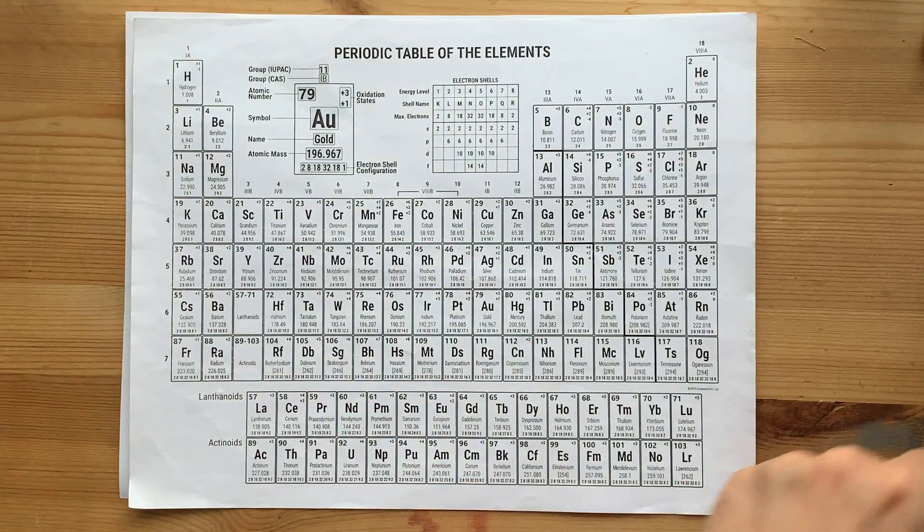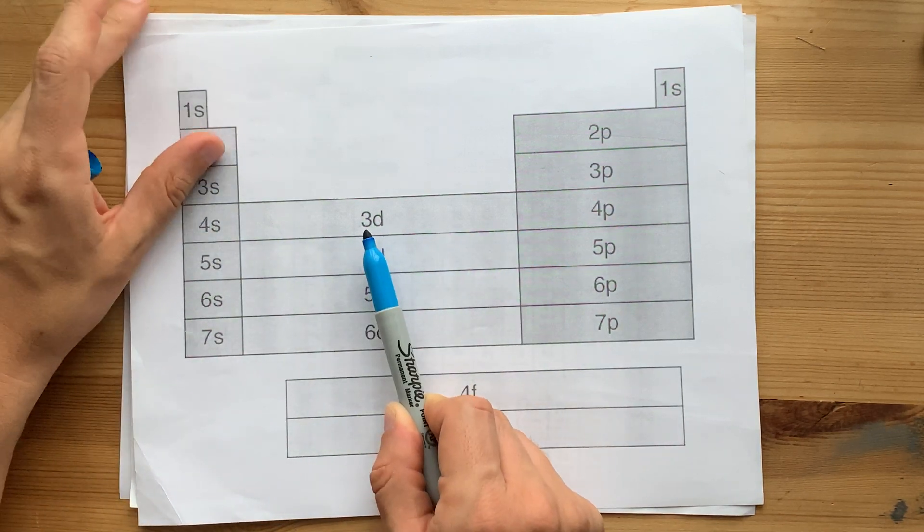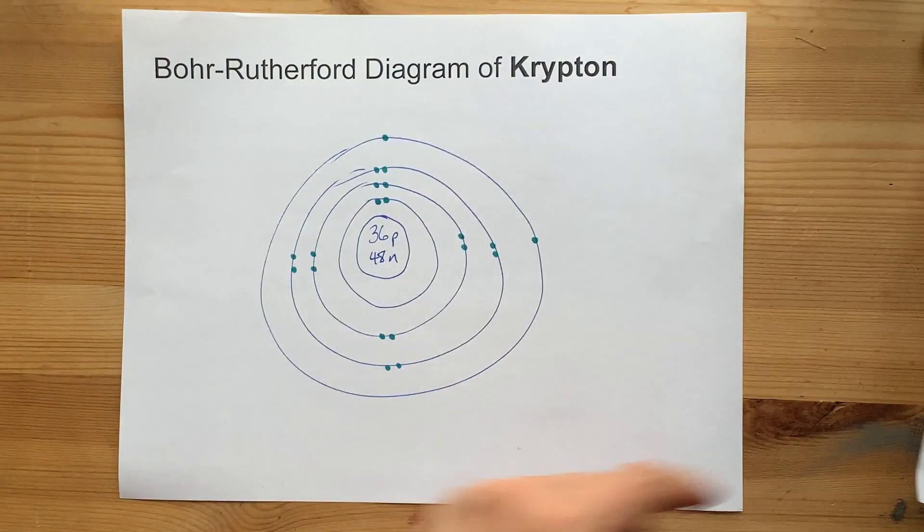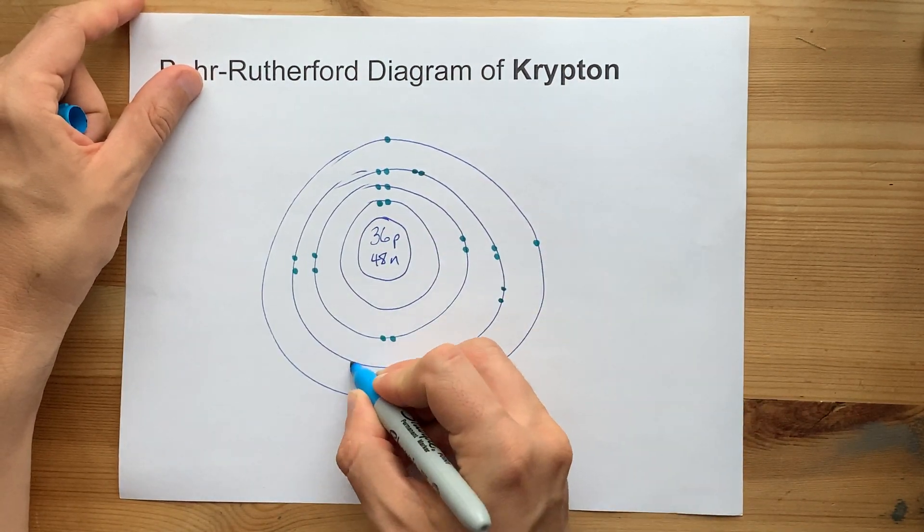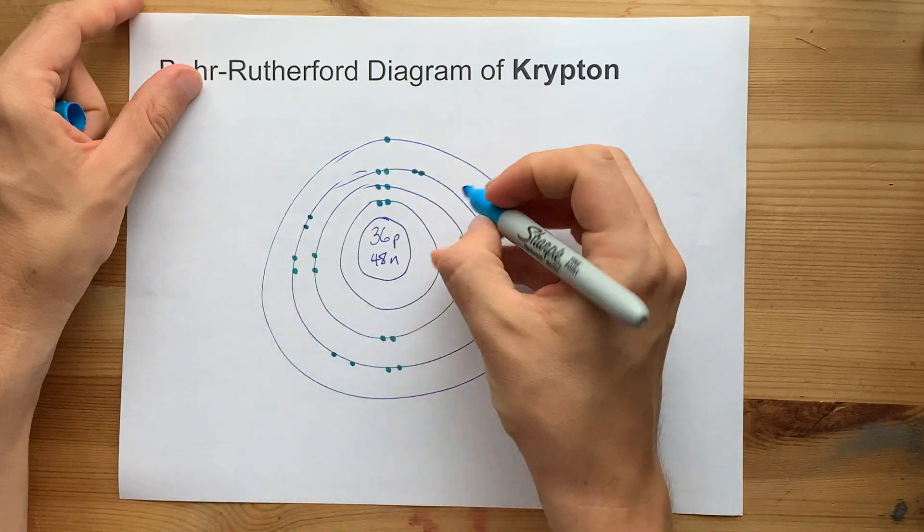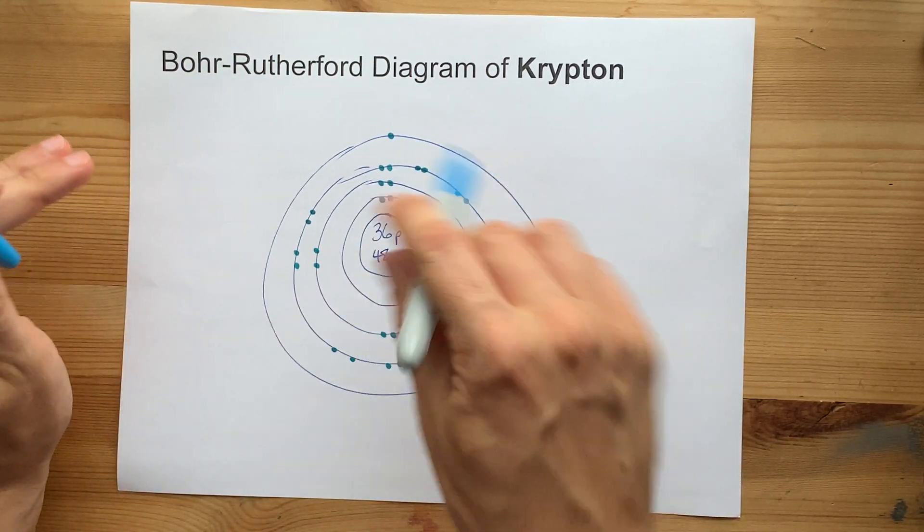But by the time you get there, you need to put the next 10 electrons into the third shell. It's just the way it is. So one, two, three, four, five, six, seven, eight, nine, 10 extra electrons all on the third circle.